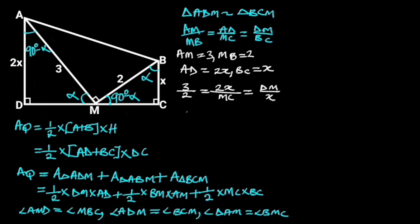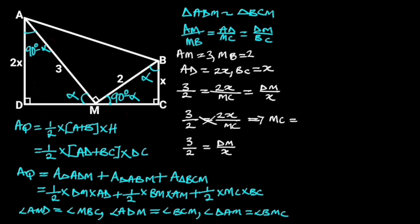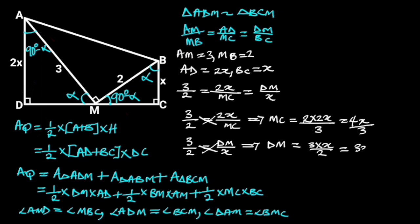This can be written as 3 over 2 equals 2X over MC, and 3 over 2 equals DM over X. By cross-multiplication, MC equals 2 times 2X over 3, which equals 4X over 3. Also by cross-multiplication, DM equals 3 times X over 2, which equals 3X over 2.